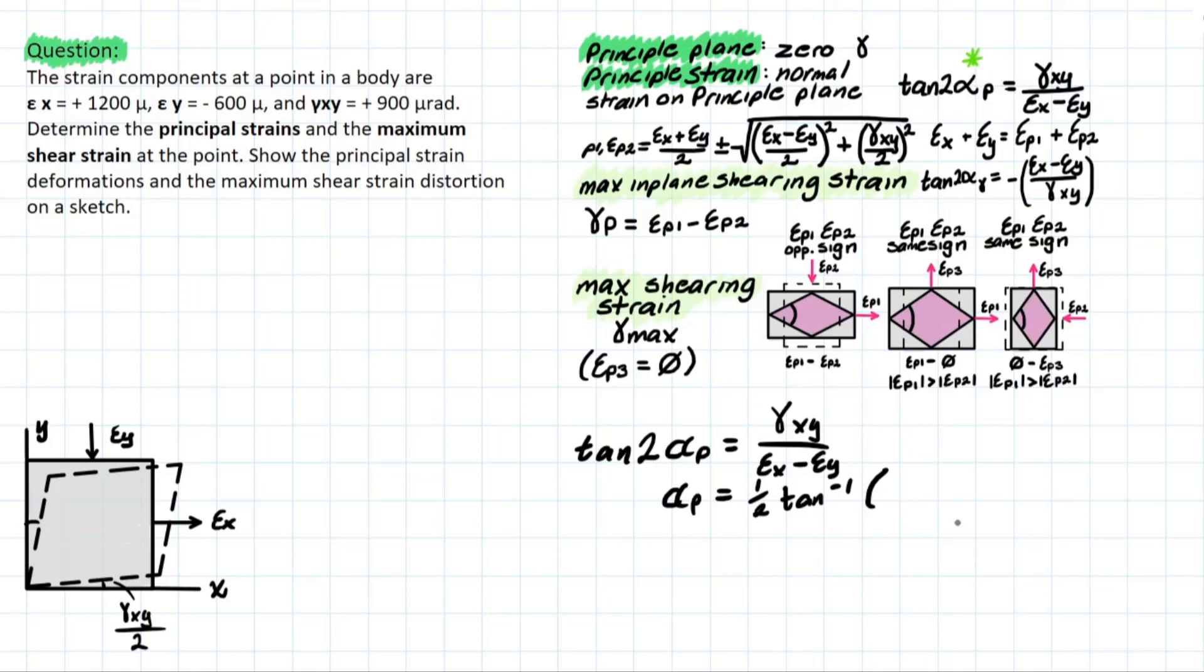So shear XY is given as positive 900. All of our units are in the same micro, so we don't need to do any conversions, and we have εx minus εy, which is a negative value, so we're doing minus minus 600.